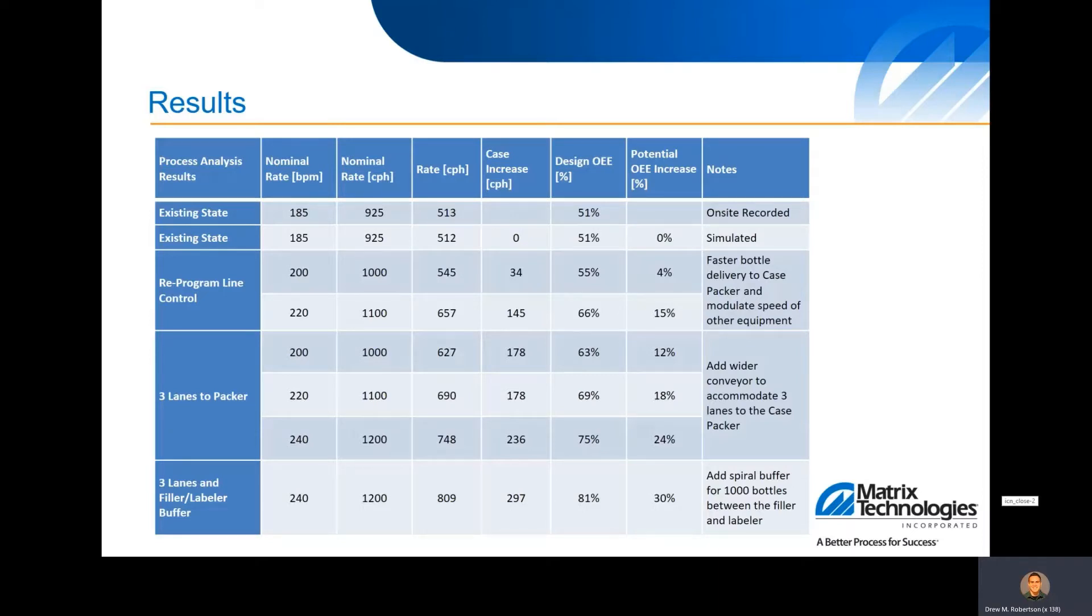If the ROI makes sense and capital is available, you can also start looking at adding equipment, adding a wider conveyor feeding the drop case packer. That basically would act like a buffer and make sure that we're keeping the drop case packer fed, not worrying about the laner getting stuck or small stop issues.